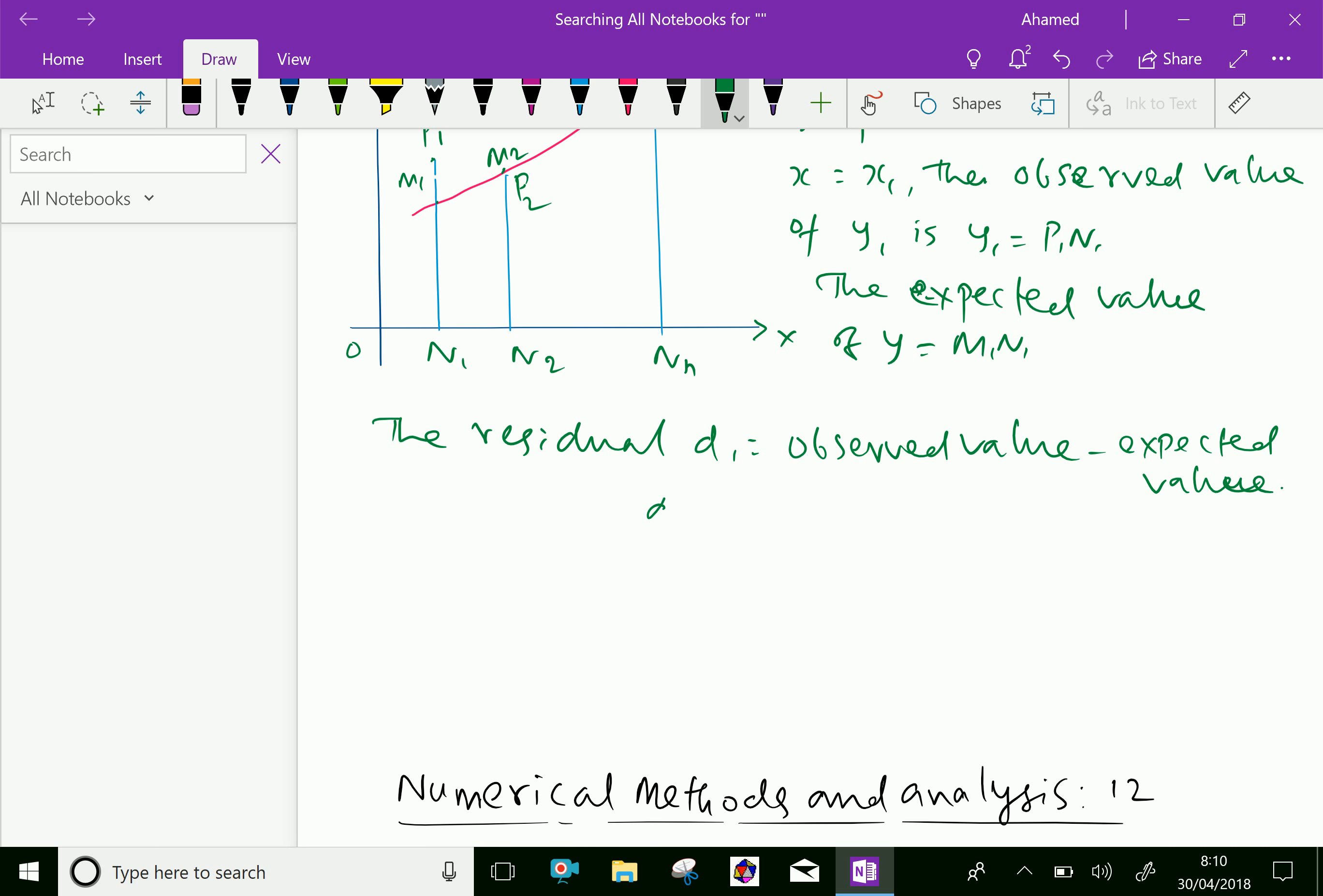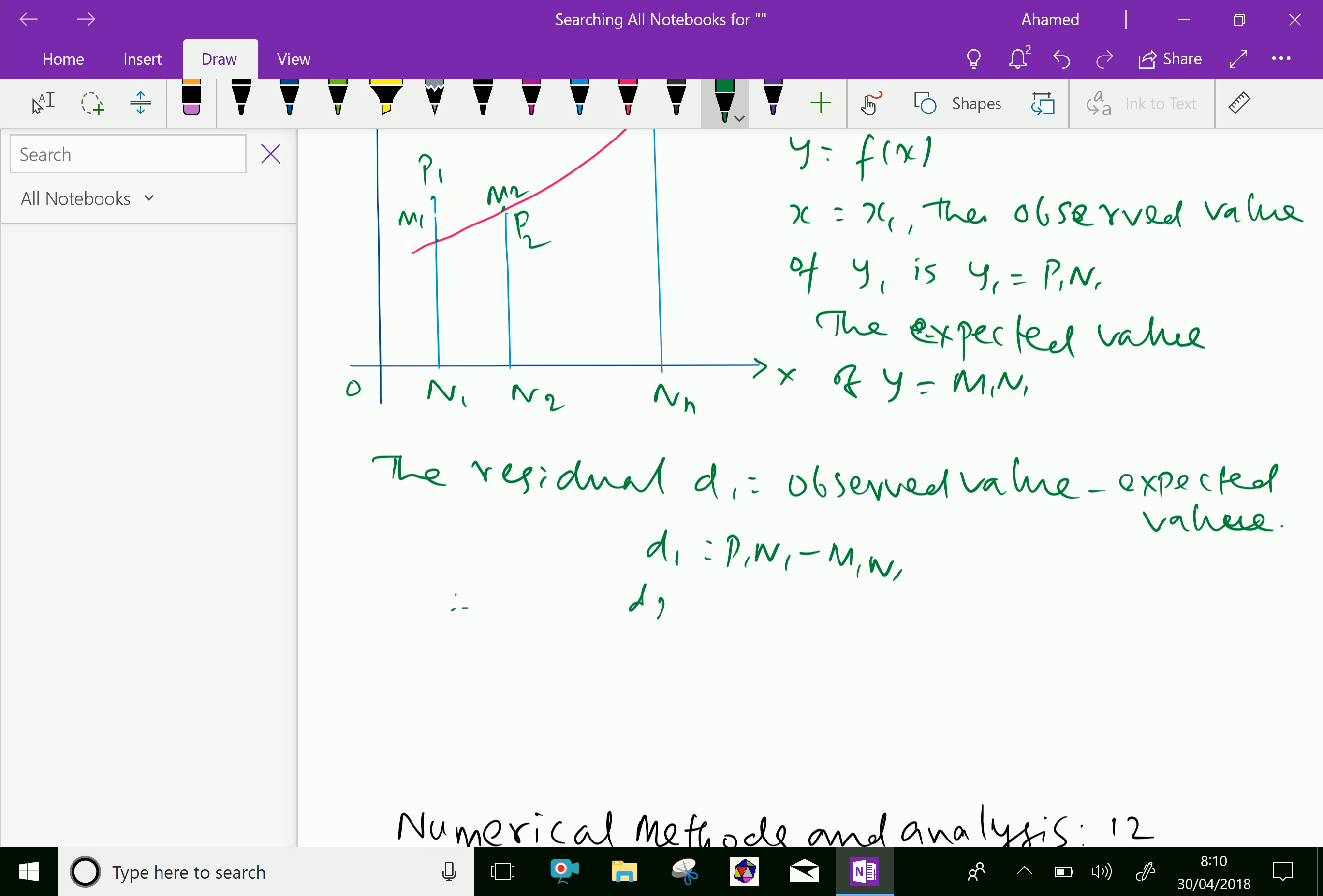Therefore, D1 equals P1N1 minus M1N1. Similarly, D2 equals P2N2 minus M2N2, and like that Dn, the nth value of residual, is PnNn minus MnNn.